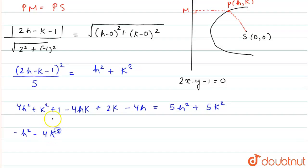Then, this is 1, this will be plus 1, then minus 4hk plus 2k minus 4h equals 0.